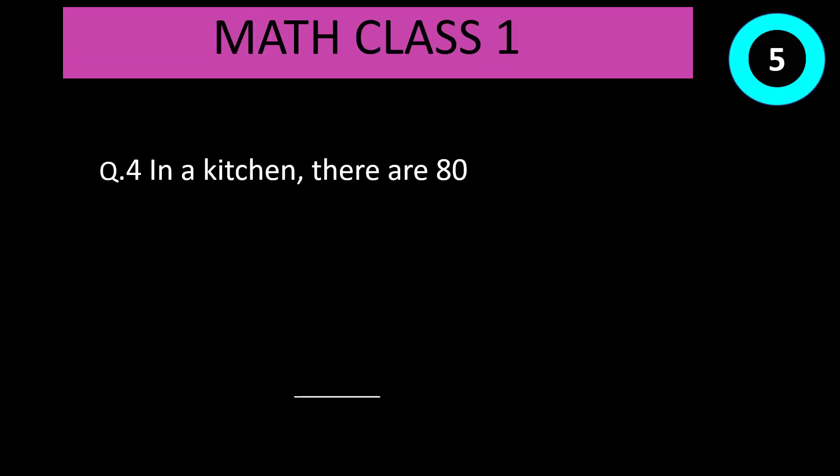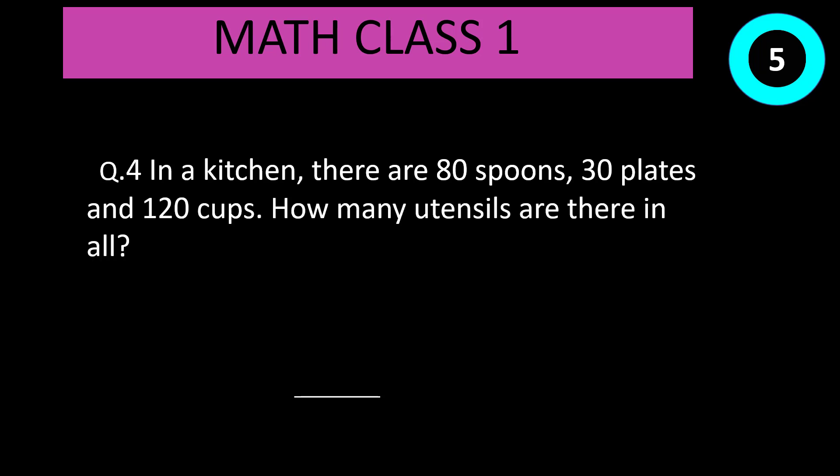Question number 4: In a kitchen, there are 80 spoons, 30 plates, and 120 cups. How many utensils are there in all? Correct answer is 80 plus 30 plus 120 equal to 230.